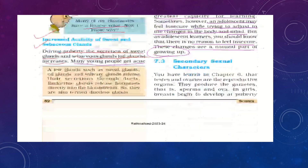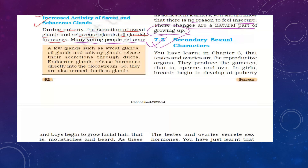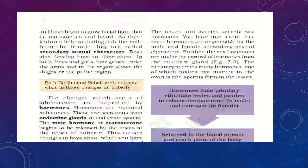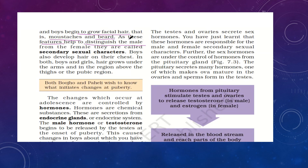Now we will discuss secondary sexual characters. The reproductive organs — testes and ovaries — produce gametes: sperms in males and ova in females. In girls, the breasts begin to develop at puberty. In boys, secondary sexual characters include the growth of facial hair such as moustaches and beard. These features help distinguish males from females and are called secondary sexual characters. Both boys and girls also grow hair under their arms and in the pubic region.